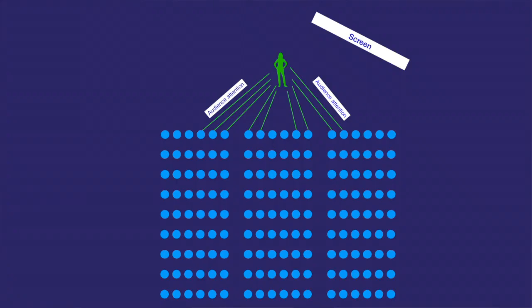When you have control of the room setup, always put your screen to your left as the presenter — to the audience's right — as you can see in this diagram. What I've learned from brain scientists is that, at least in the Western world, we tend to read from left to right. You want the audience's attention to start with you, as if they're beginning a sentence in a book, then go to the right to look at the screen, and then their attention will come back to you.